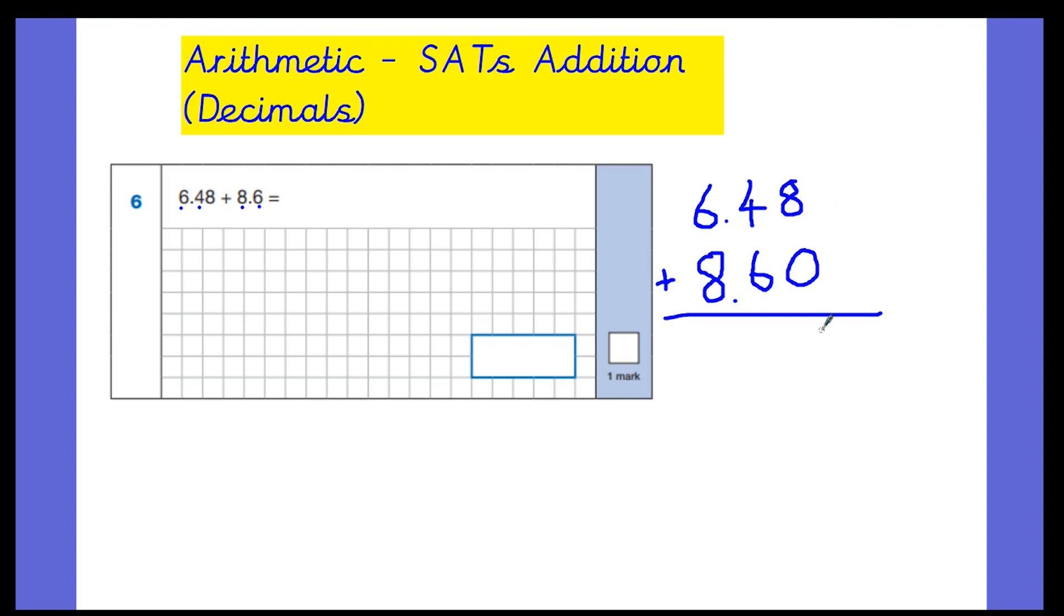Now, I'm going to add these together. 0 add 8 is 8. 4 and 6 make 10. So I'm going to put 0 down there. I'm going to carry the 1. 6 and 8 make 14 plus 1 is 15. And don't forget at the end, if they forget to put their decimal point in, then they won't get a correct answer. So once again, writing the number, the answer, the final answer in the box provided to get that correct mark. So that's adding decimals.